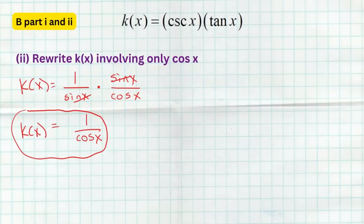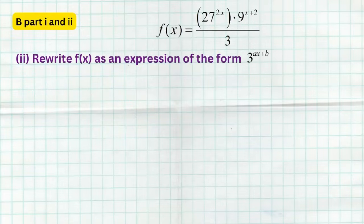Let's look at one more possible function for Section B — an exponential function. The directions say to rewrite f(x) as an expression of the form 3^(ax + b). So we want one base of 3 with a power in the form ax + b, and we need to figure out what a and b are. First, change all bases to base 3. The denominator is already 3 to the first. Then 27 = 3³ and 9 = 3².